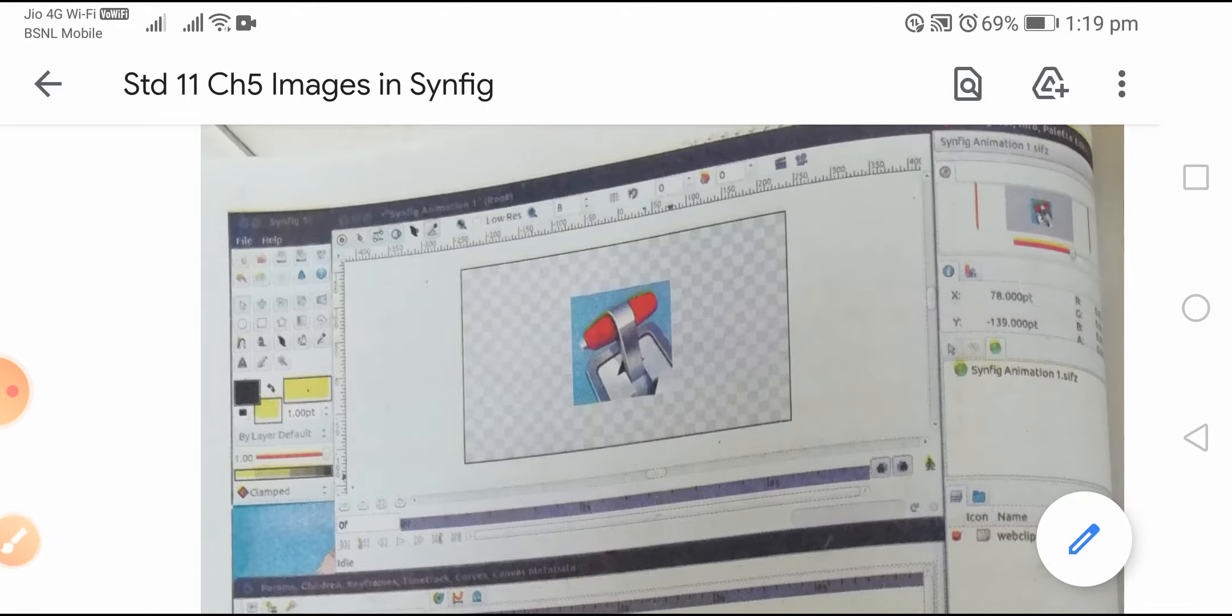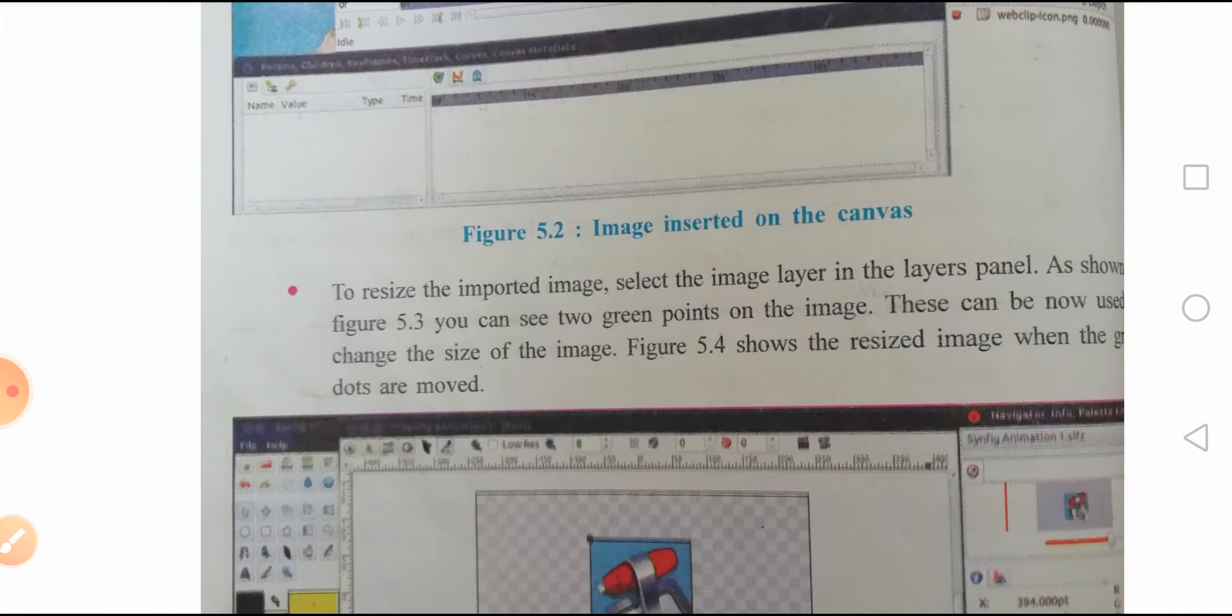You can see the image information including its X and Y coordinates and size. Figure 5.2 shows the image inserted on the canvas.